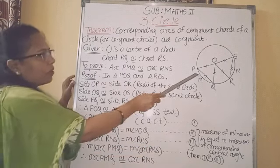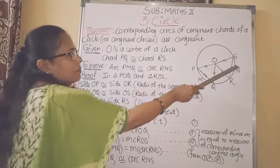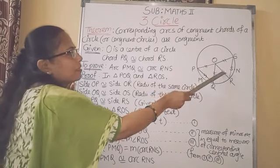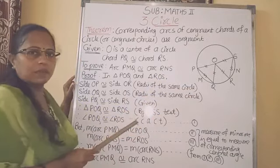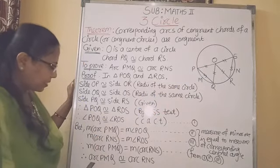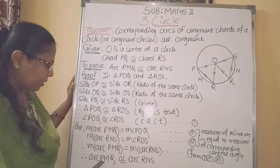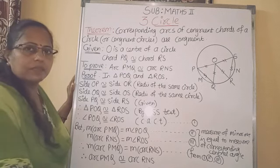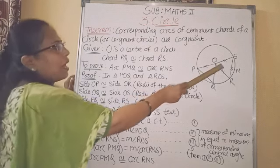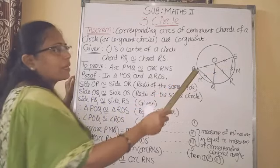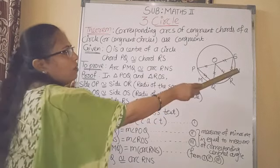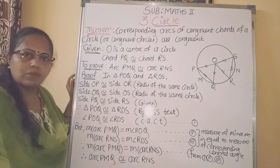We have the measure of the two arcs equal, and these two arcs have equal radii since they are from the same circle. So, the arcs have equal measure and equal radii — therefore, arc PMQ is congruent to arc RNS. This proves that if two chords are congruent in a circle or congruent circles, then the arcs corresponding to these chords are also congruent.